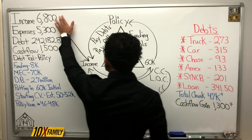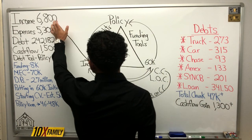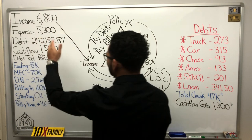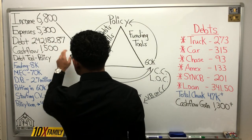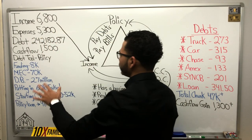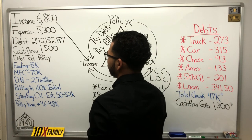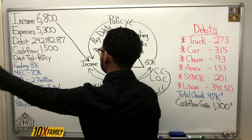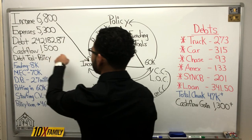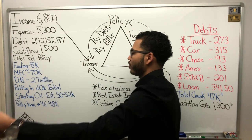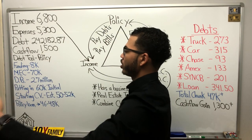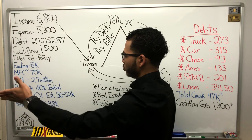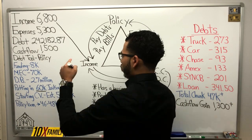Looking at the numbers: income of $6,800, expenses $53, total debt $242, and starting cash flow roughly $1,500 per month. The debt tool we're going to establish is a policy — so without even having to run credit, we can establish a policy as our debt tool to rapidly pay off debt.